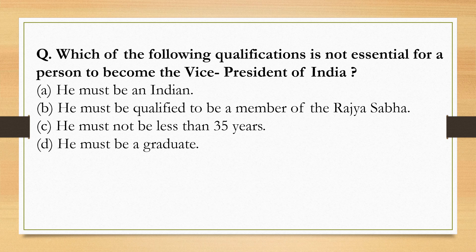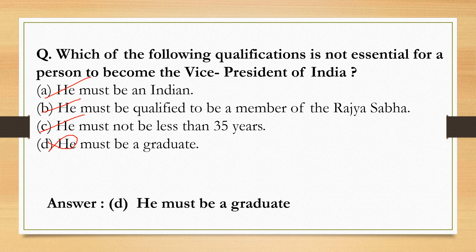Which of the following qualifications is not essential for a person to become the Vice President of India? He must be an Indian citizen — correct. He must be qualified to be a member of the Rajya Sabha — correct. He must not be less than 35 years of age — correct. However, he must be a graduate — this is NOT required, as no educational qualification is prescribed by the Constitution for the Vice President or any political executive.